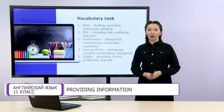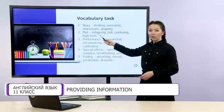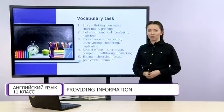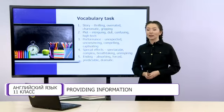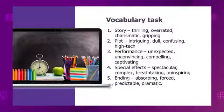Now let's do a vocabulary task. On the screen you can see five aspects of films and adjectives describing them. Your task is to choose the odd one in each aspect and decide which other aspect this adjective can describe. You can start!